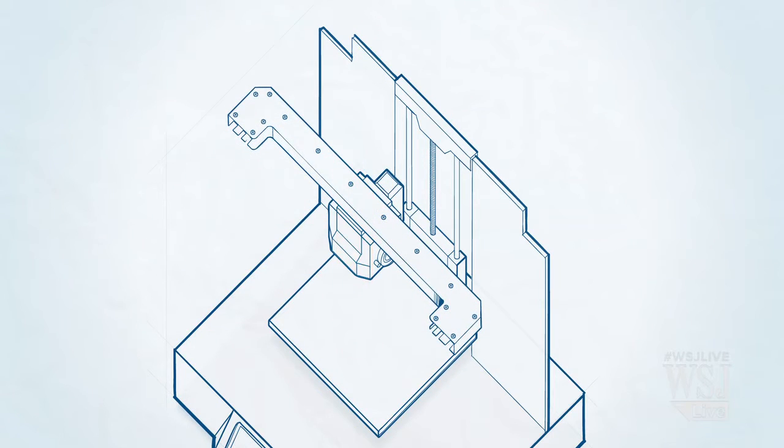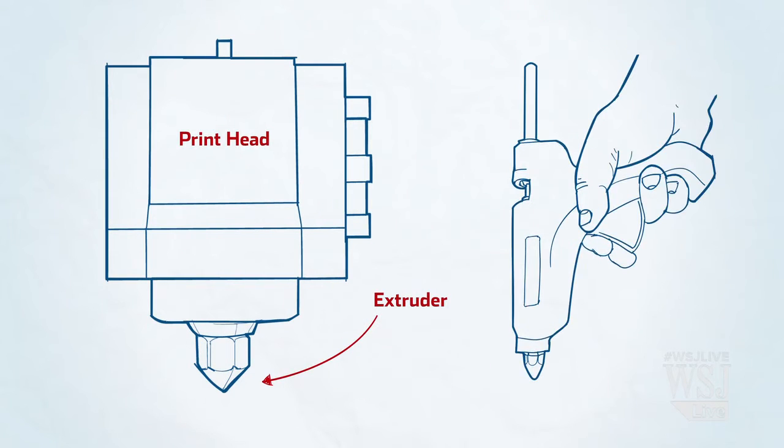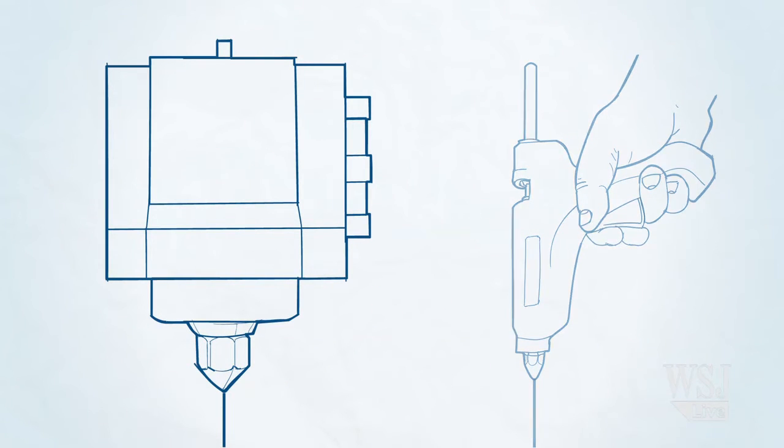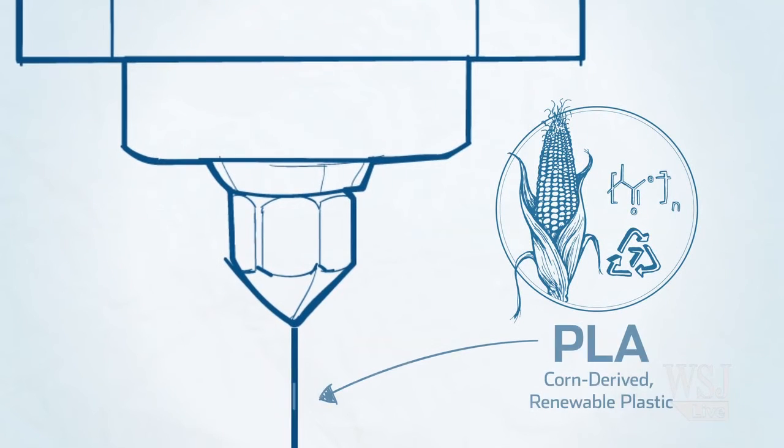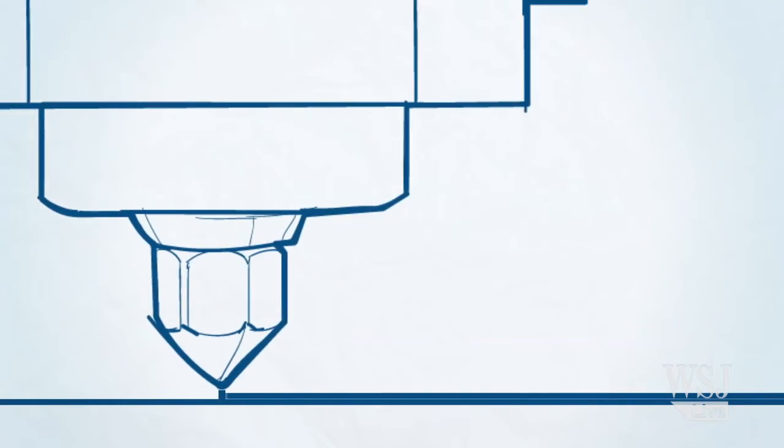At the heart of the printhead is the all-important extruder. It works a lot like a hot glue gun, melting a long coil of corn-derived renewable plastic called PLA at around 230 degrees Celsius, and then applying or printing it onto the object. Other plastics, like ABS, can also be used.